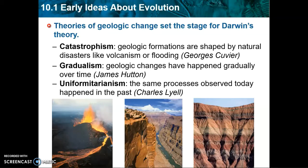The third geologic idea is uniformitarianism — the idea that geologic processes we observe today are the same processes that happened in the past. The way rock erodes today, or the way igneous rock is formed from molten magma, happened the same way in the past. This is very helpful for biologists because if we're studying living species today, we can say the way these species work and interact is probably very similar to how ancient species would have done the same.